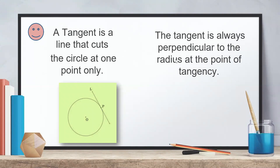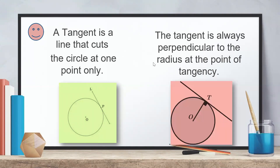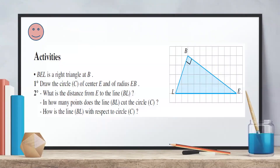As we know, the tangent is always perpendicular to the radius at the point of tangency. Look at the new figure: we have a circle C of center O and a line cutting the circle at one point T. T is the point of tangency, OT is perpendicular to the tangent at T. This becomes a rule: the radius is perpendicular to the tangent at the point of tangency.